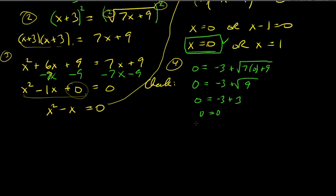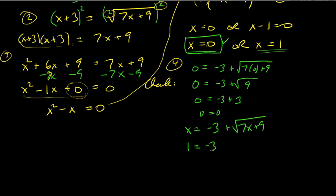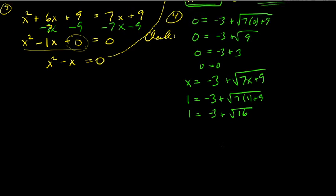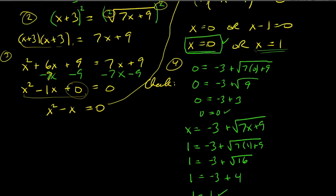Check x equals 1: 1 equals negative 3 plus the square root of (7 times 1 plus 9), which is negative 3 plus the square root of 16, equals negative 3 plus 4, equals 1. One equals one — correct. X equals 1 is also valid.